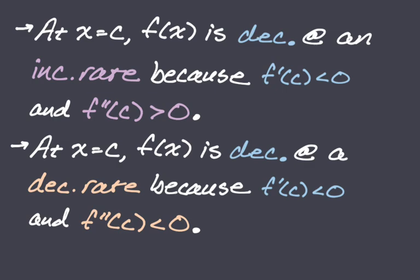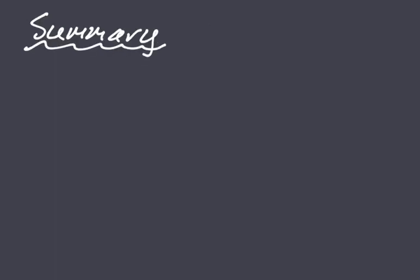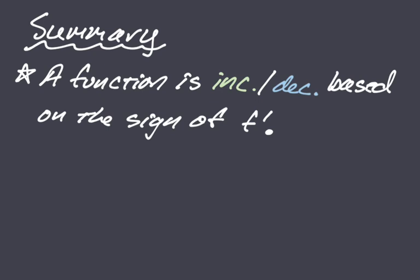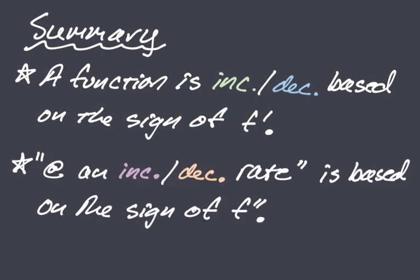Let me summarize. We're just clearing up a common misconception. A function is increasing or decreasing based on the sign of f prime: increasing because f prime is positive, decreasing because f prime is negative. The part where we say 'at an increasing or decreasing rate' is based on the sign of f double prime. You'll say at an increasing rate if f double prime is positive, and at a decreasing rate if f double prime is less than zero.